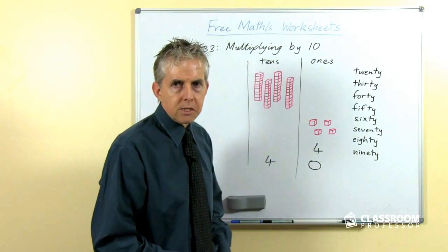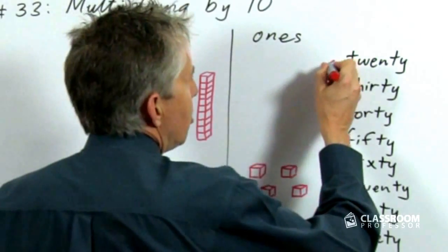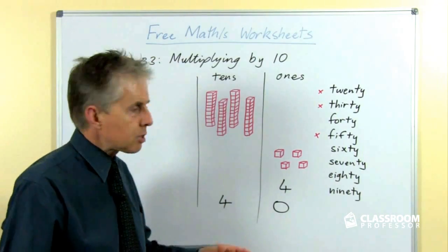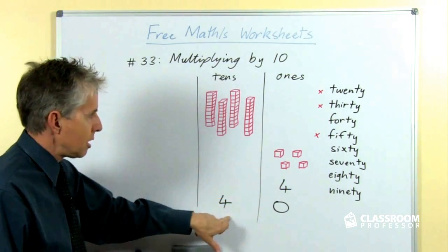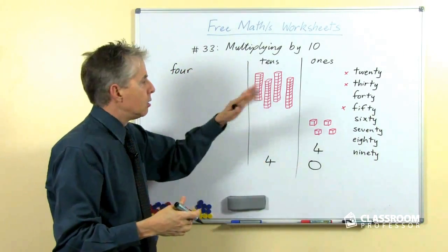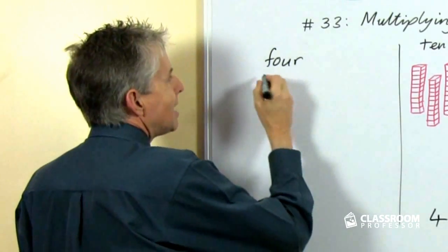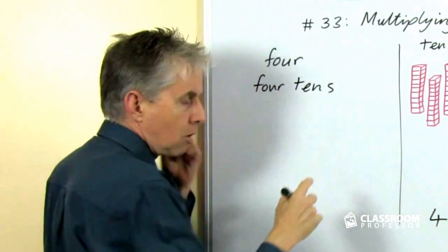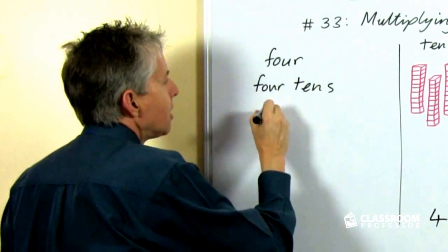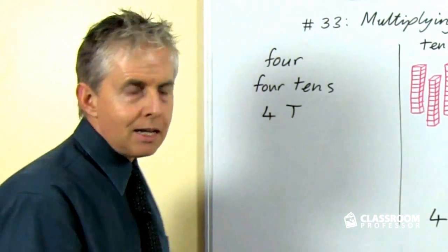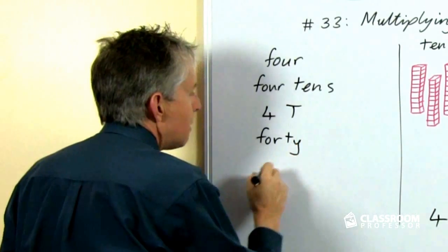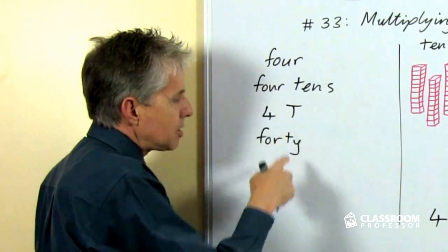There are some tricky aspects and inconsistencies. For example, 20, 30 and 50 don't reinforce the connection between the name for the number of ones and the name for the number of tens. When dealing with 4, we have 4 blocks, we write a 4, and we have 4 tens. We can abbreviate that with the symbol for 4 and a capital T to stand for tens — making '4T' — and of course we call it 40, which looks a lot like 4 and T for tens.